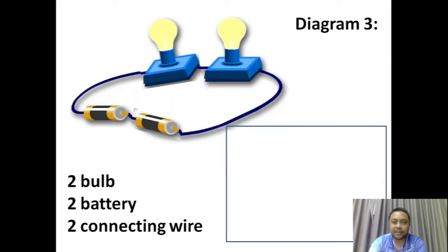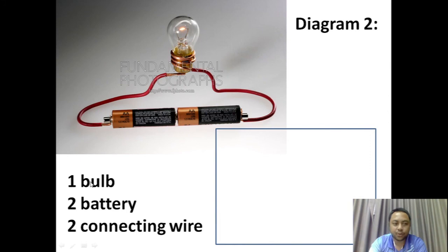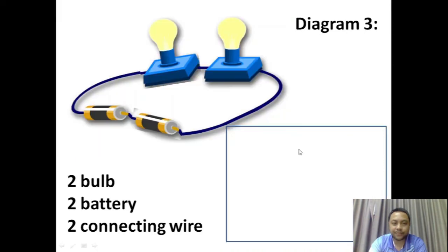Let's review again. Diagram one: we have one bulb, one battery, and two connecting wires. Diagram two: we have one bulb and two batteries, and two connecting wires. Diagram three: we have two bulbs, two batteries, and two connecting wires.